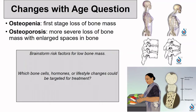The first stage of bone mass loss is called osteopenia. Anyone with osteopenia is at a higher risk for osteoporosis. Older individuals in general are much more prone to fractures due to this loss of bone mass. They may also seem shorter than they used to be due to vertebral collapse.